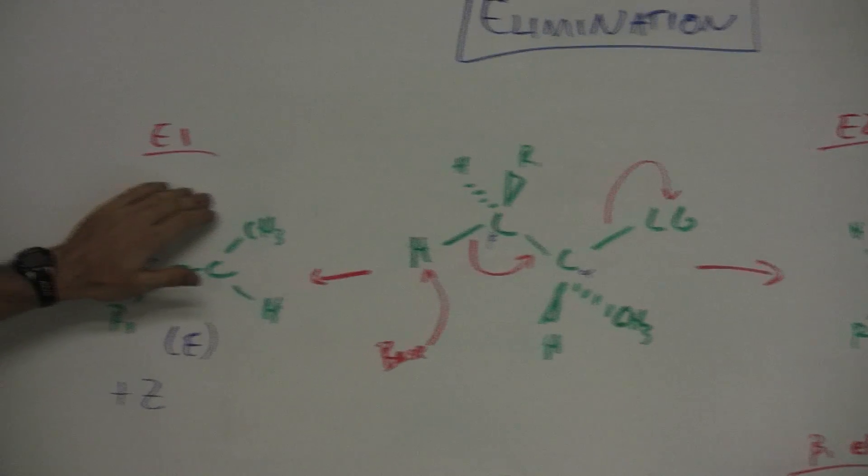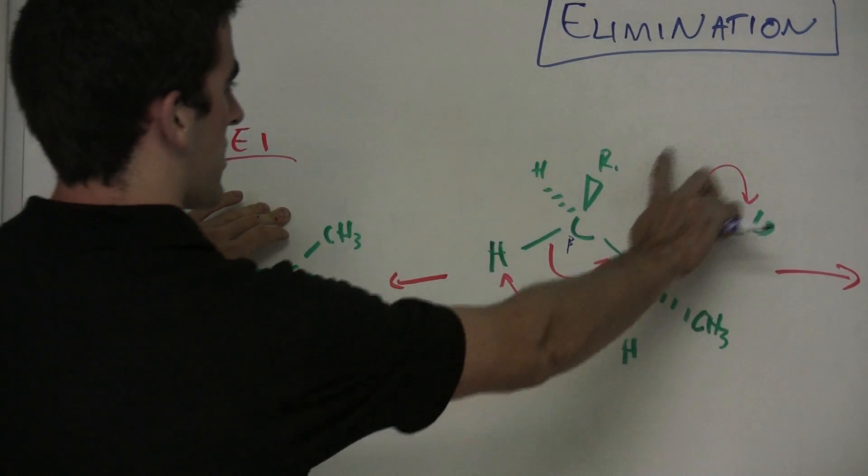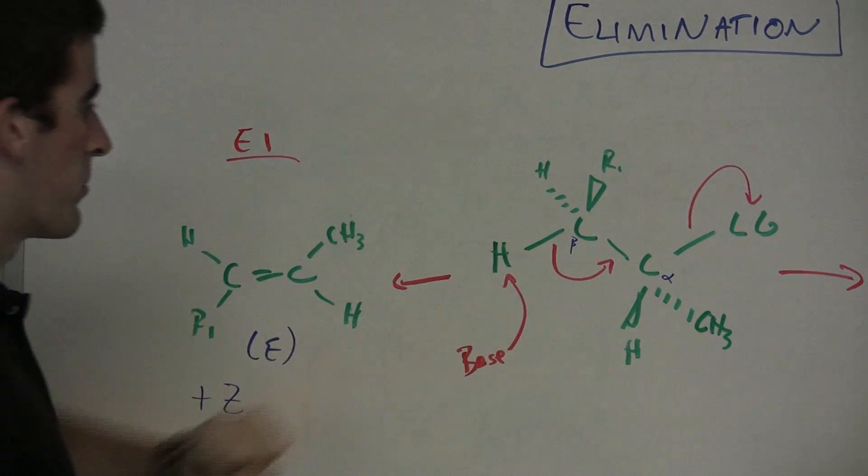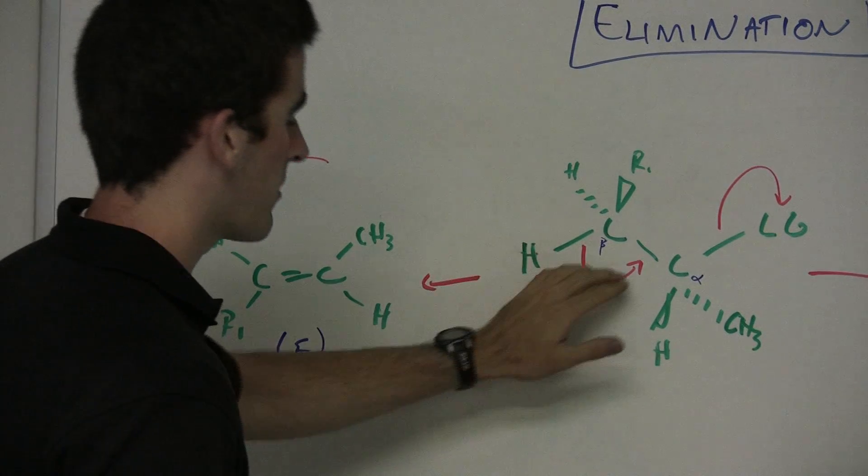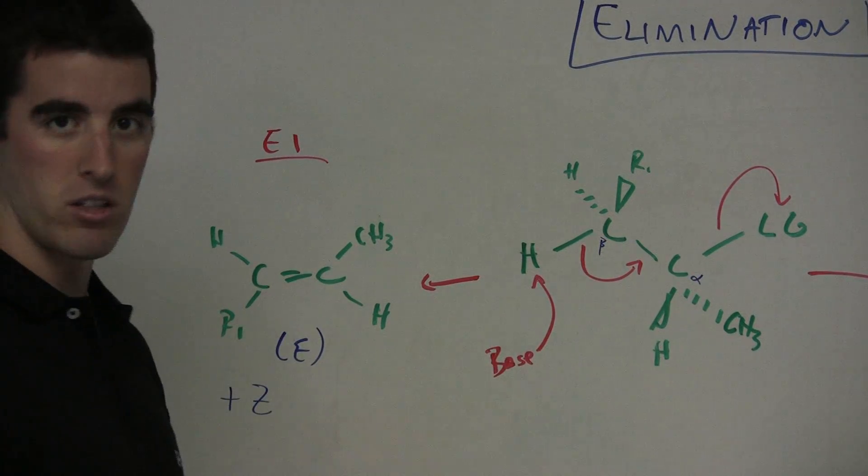With the E1 here, what's first going to happen is the leaving group is going to leave. It's going to cause the carbocation to form there. Now after the base comes in and takes off the H, the double bond is going to come down and close off that open shell there.